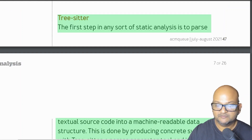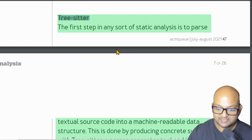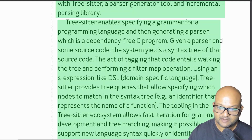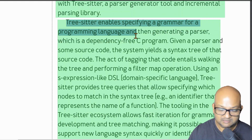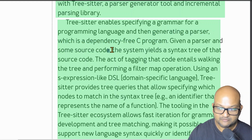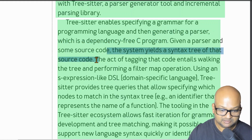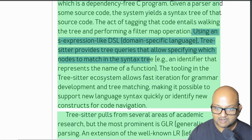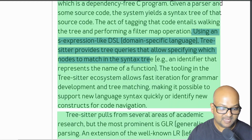That design objective leads to one of their key implementation choices: using TreeSitter as their parsing engine for source code. TreeSitter is a framework that lets you specify the grammar of a language and then generates a parser for that grammar. Importantly, the generated parser is a standalone, dependency-free C program. The output is a syntax tree of the source code fed to it, and on top of that TreeSitter provides a Lisp-like DSL to query that abstract syntax tree and extract information from it.